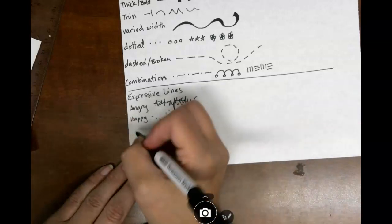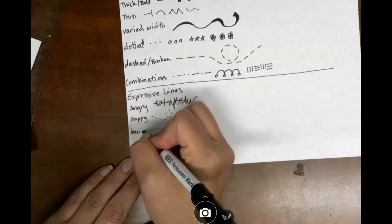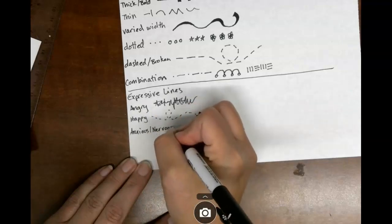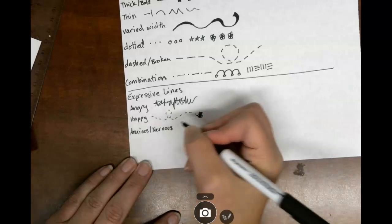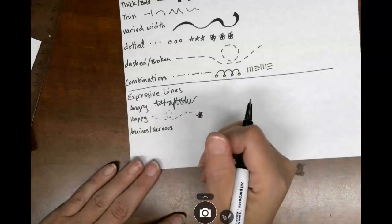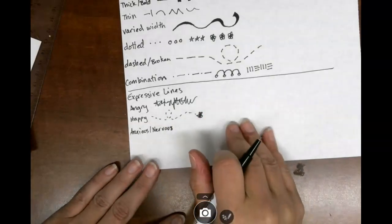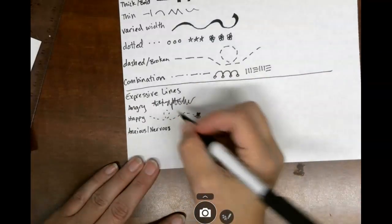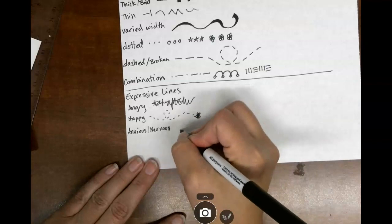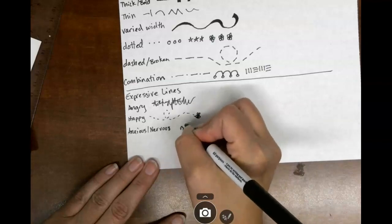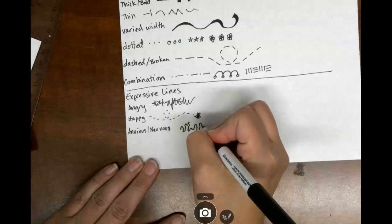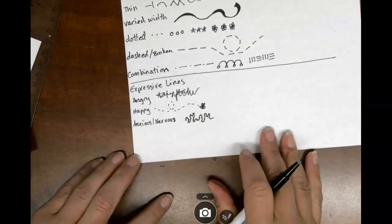Then we're going to do anxious, A-N-X-I-O-U-S, or nervous, N-E-R-V-O-U-S. Now anxious or nervous is how you feel sometimes before a test or when you tell someone they look nice or when something else happens. So this is a line that is up to you on how it looks. So anxious or nervous can be a lot of different things, but that's what mine looks like.